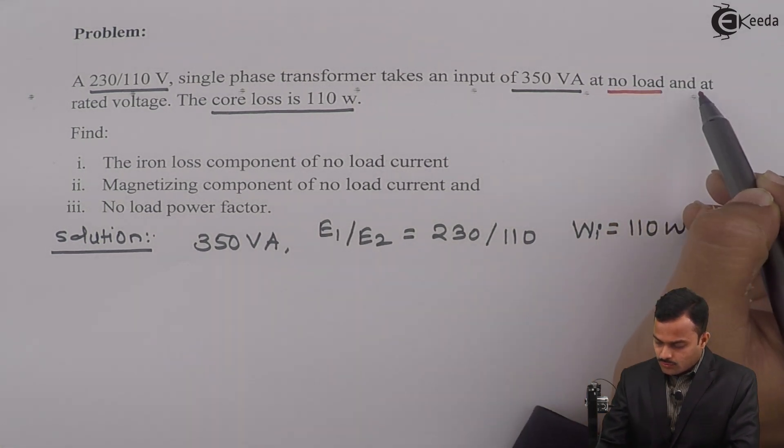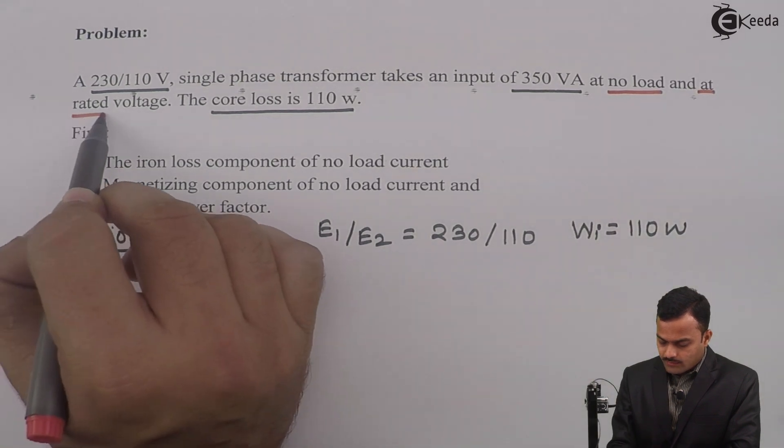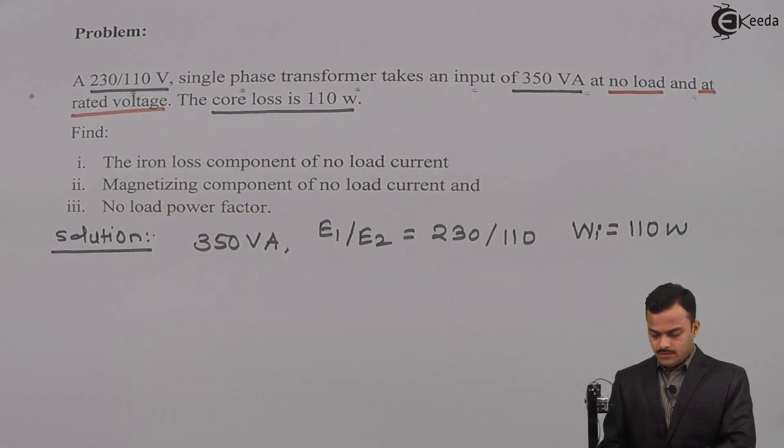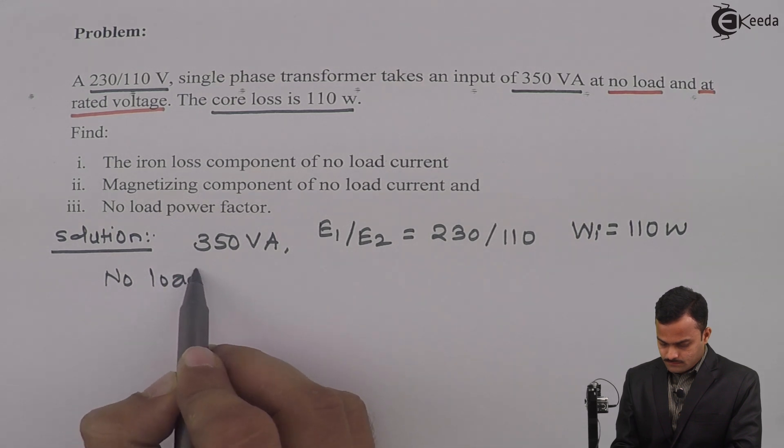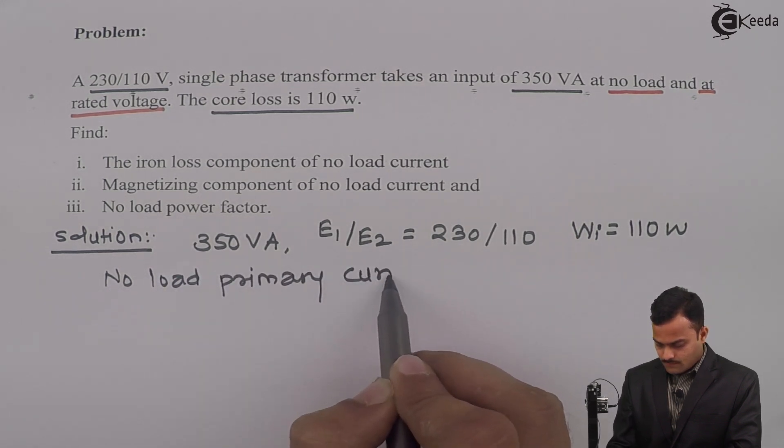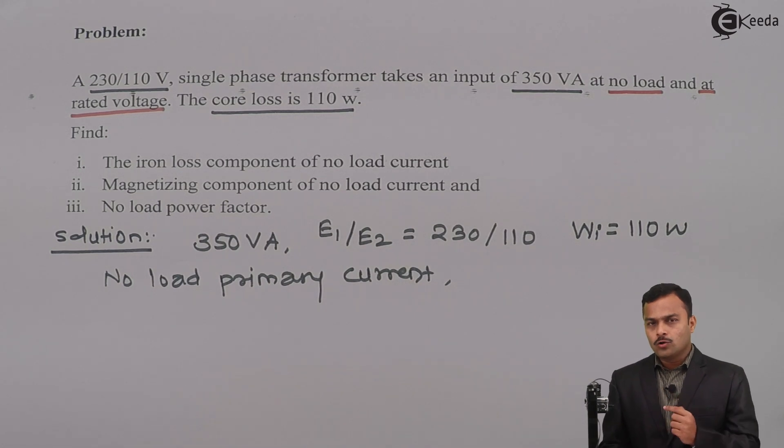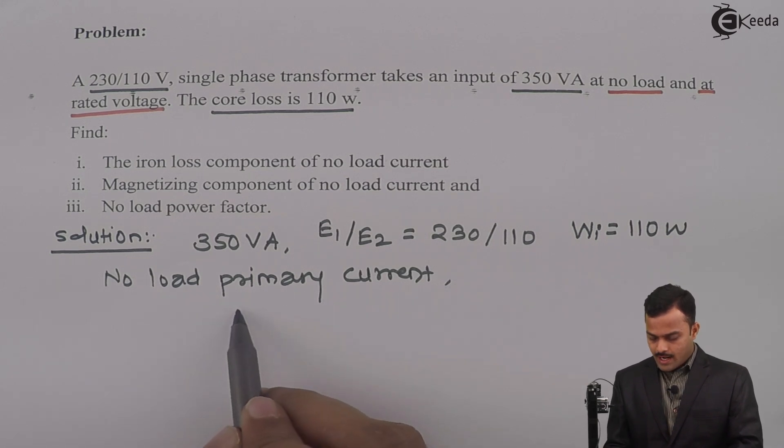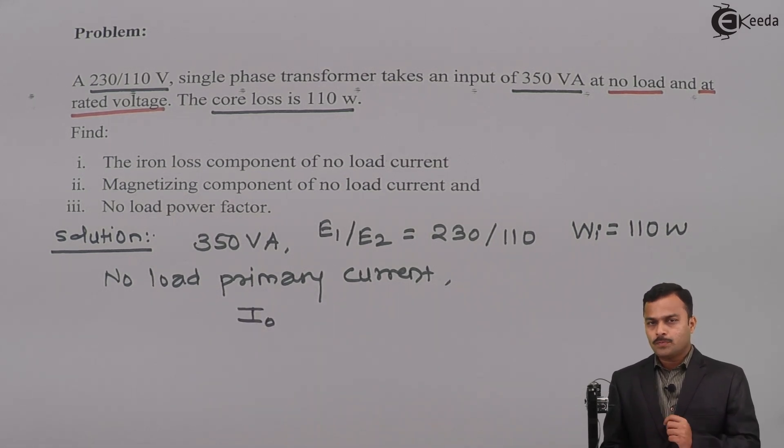Here in this problem this is very important: it's no load and at rated voltage. Now from this what I will get first is no load primary current. How to get that and why is it called no load? Because as I said earlier, secondary side we are keeping open - we are not applying any load to it, so whatever primary current is there that is no load primary current given as I₀.